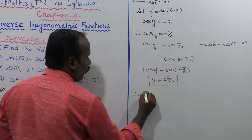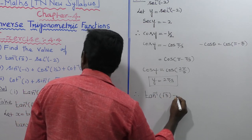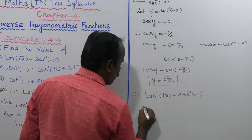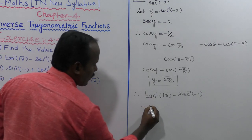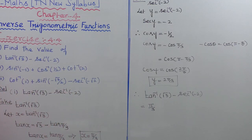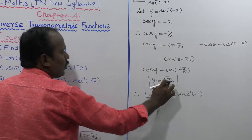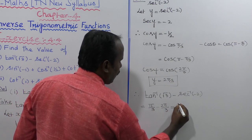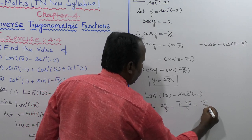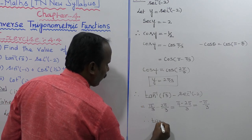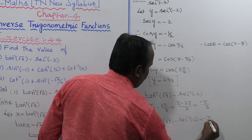Therefore, the given sum tan inverse of root 3 minus secant inverse of minus 2 equals x minus y. Substituting, x is equal to pi by 3 and y is equal to 2 pi by 3. So the result is pi by 3 minus 2 pi by 3, which equals pi minus 2 pi over 3, equal to minus pi by 3. Therefore, tan inverse of root 3 minus secant inverse of minus 2 equals minus pi by 3.